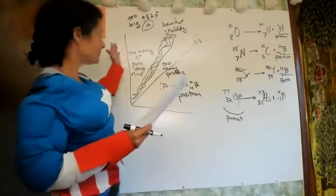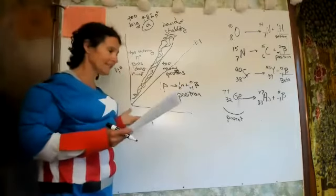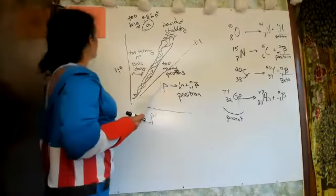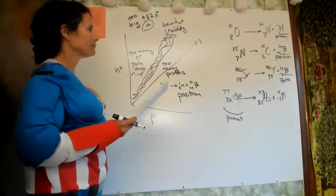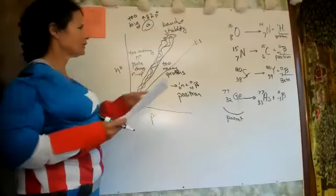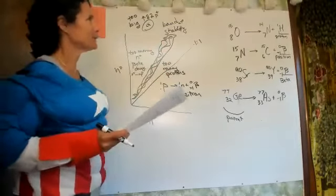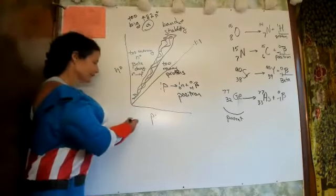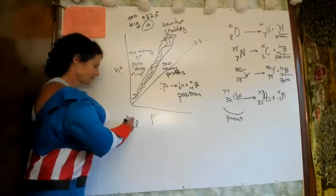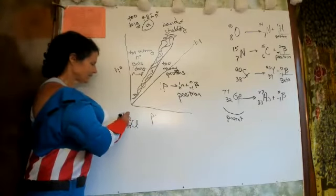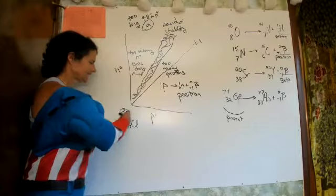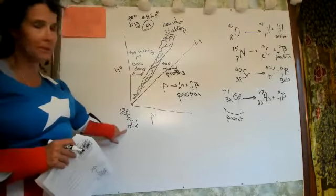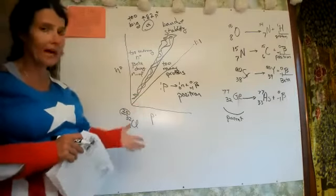Summary: if you're above the band, you have too many neutrons — beta decay. If you're below the band, you have too many protons — positron emission. For example, strontium isotopes would be predicted to go through beta decay. Something like chlorine-32 — chlorine wants to be around 35 — has too many protons, so we predict positron emission.